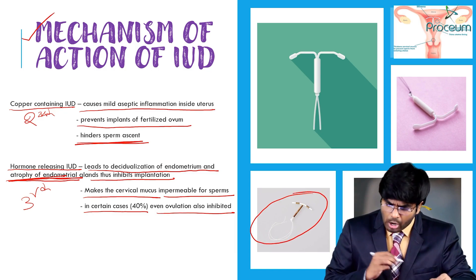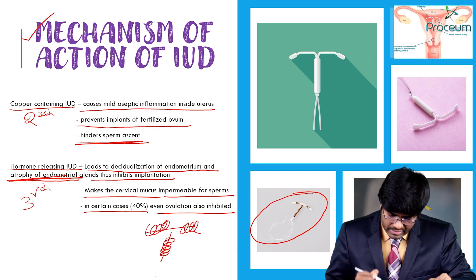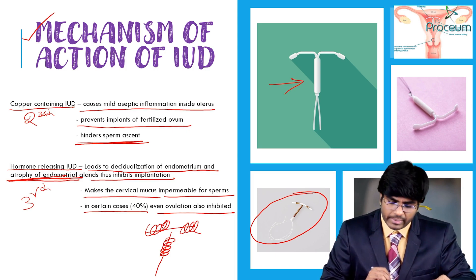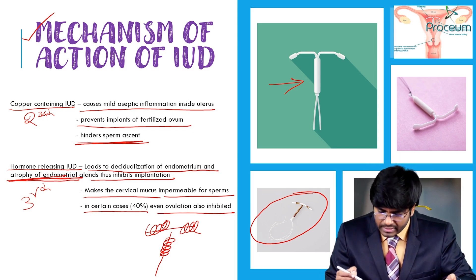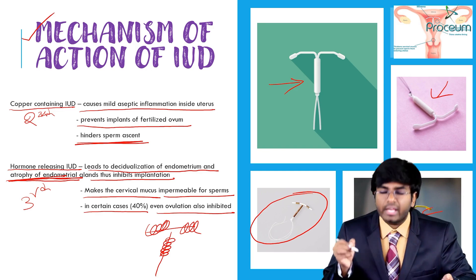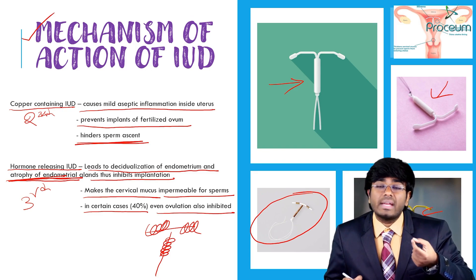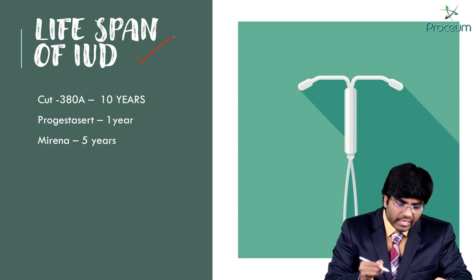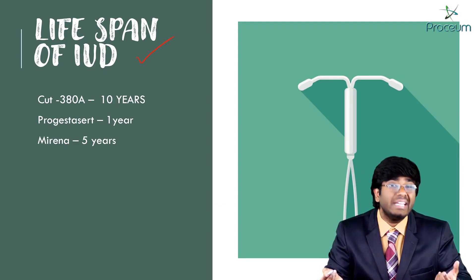In this image, you can identify a copper-containing IUD by the copper winding on its arms and stem. A hormonal IUD has no copper winding — you can distinguish them visually. Copper-containing IUDs are identified by copper winding around the stem and arms.